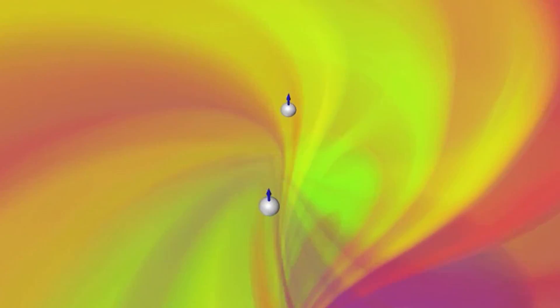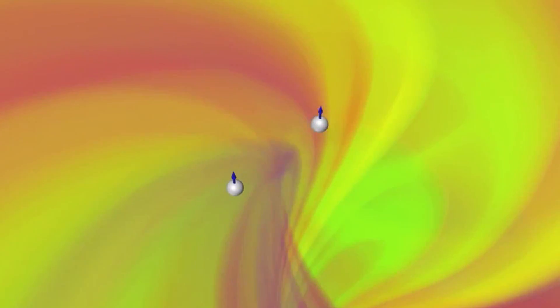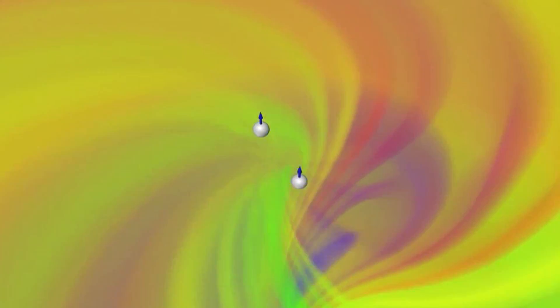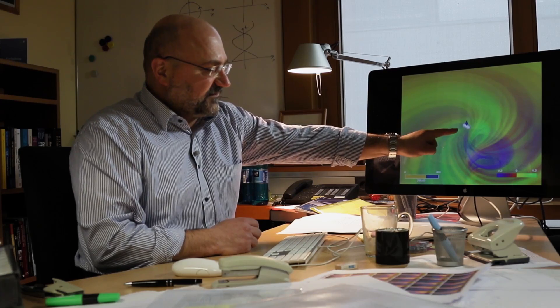Because they are getting closer and closer, at one point they will get so close that they merge. And this is the time, the very time when they merge. And they produce a single black hole. So this is the horizon of the merged black hole.